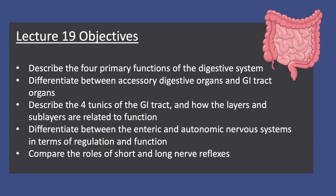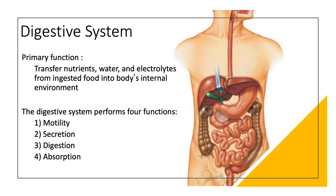We'll begin today by describing the four primary functions of the digestive system. The main goal of the digestive system is to take the food that we ingest and pull the nutrients, water, and electrolytes that our body needs from that ingested material. We accomplish this by completing four functions: motility, where we mix and move ingested materials; secretions that the body adds; digestion of those materials; and finally absorption.